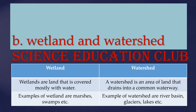Wetlands are land areas covered mostly with water. A watershed is an area of land that drains into a common waterway. Examples of wetlands are marshes and swamps. Examples of watersheds are river basins, glaciers, and lakes.